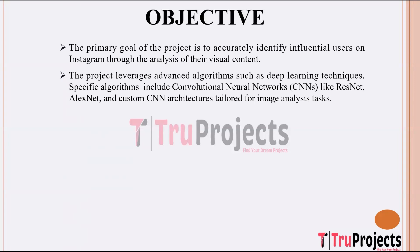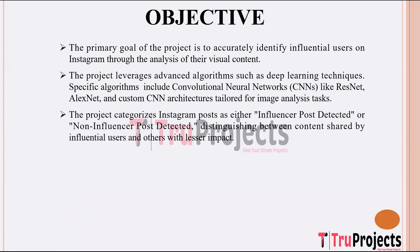Leveraging advanced algorithms such as deep learning techniques, the project utilizes convolutional neural networks (CNNs) like ResNet, AlexNet, and custom architectures tailored for image analysis tasks. These algorithms enable the system to effectively analyze and interpret visual content, facilitating the identification of influential users. Instagram posts are categorized into 'Influencer Post Detected' or 'Non-Influencer Post Detected' classes, allowing differentiation between content shared by influential users and those with lesser impact. This classification aids in streamlining marketing efforts and research focused on understanding influence dynamics on the platform.